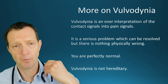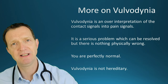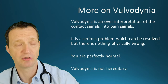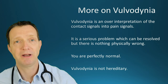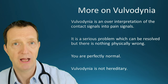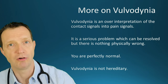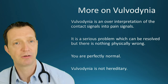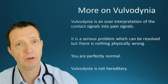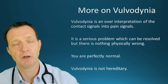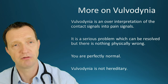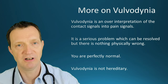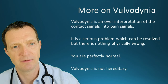A quick recap: vulvodynia is an over-interpretation of normal contact signals — whether touch or friction — translated into pain signals. It is a serious problem, but there is nothing physically wrong. It can be resolved. Under examination everything is completely normal. It is very important to remember that. Vulvodynia cannot be caught — it is not infectious, not contagious, and not hereditary; it is not passed from mother to daughter.